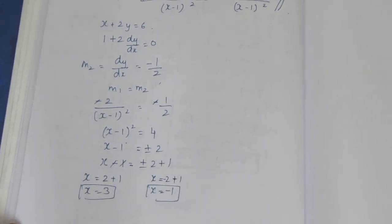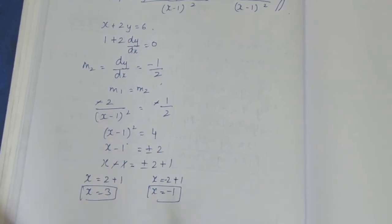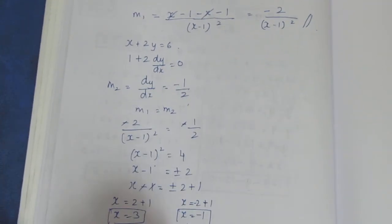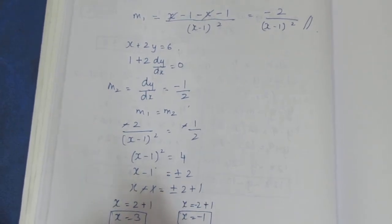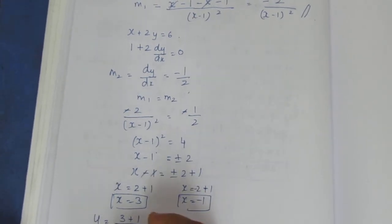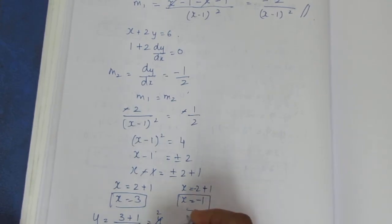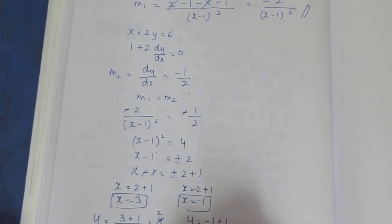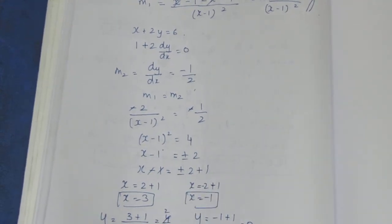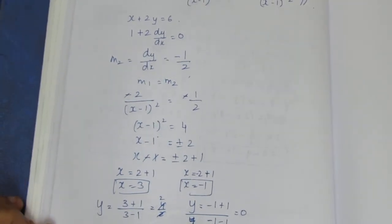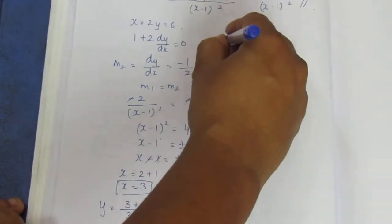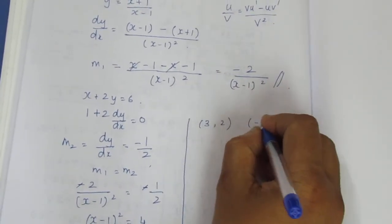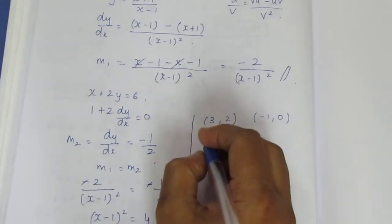Now substituting x values into the curve equation y equal to x plus 1 by x minus 1 to get y values. When x equal to 3: y equal to 3 plus 1 by 3 minus 1, which is 4 by 2, equal to 2. When x equal to minus 1: y equal to minus 1 plus 1 by minus 1 minus 1, which is 0. So the two points are (3, 2) and (minus 1, 0).